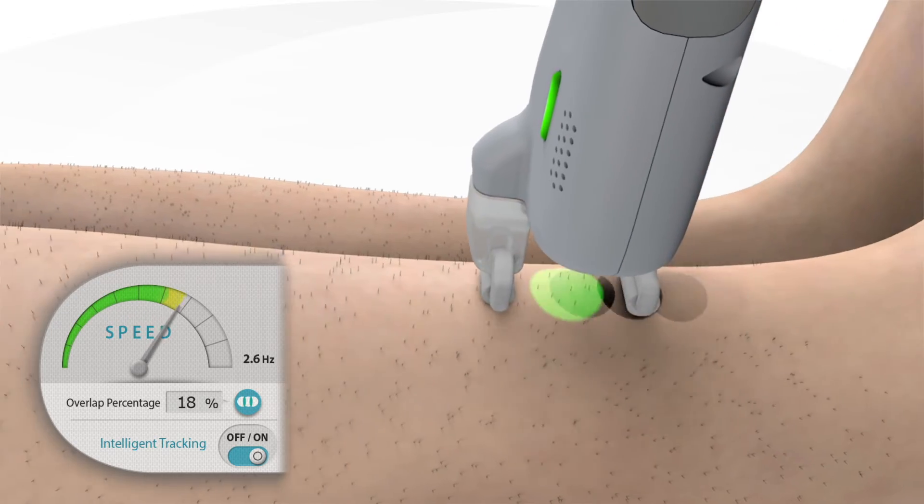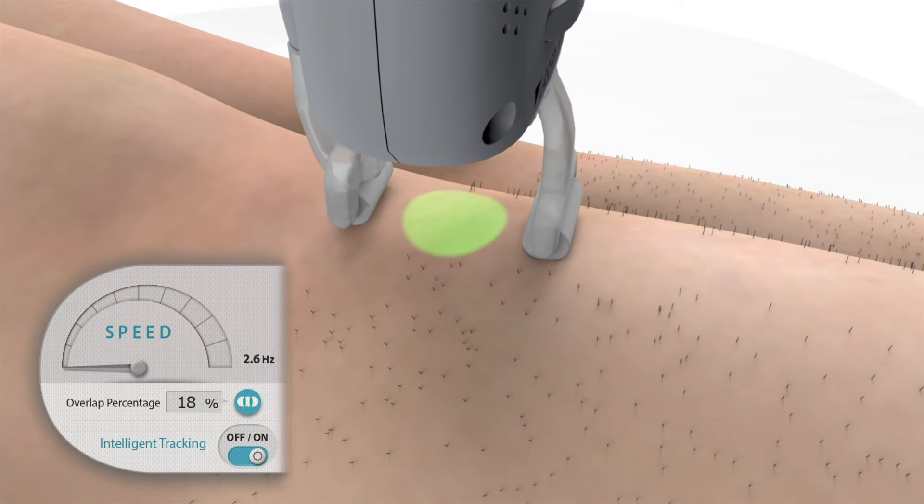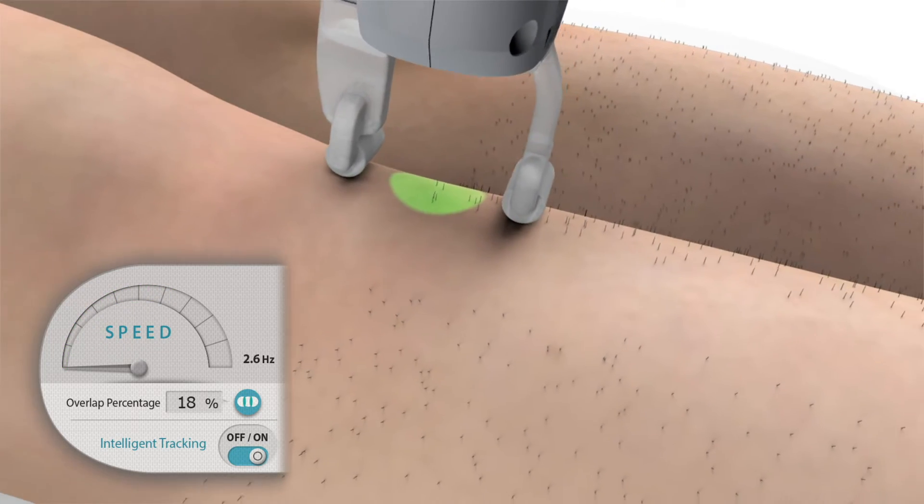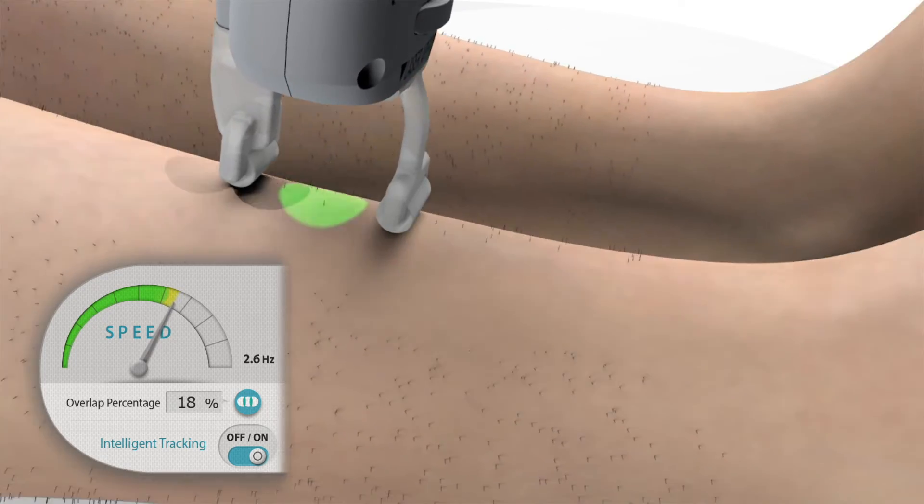Clarity 2's proprietary intelligent tracking provides more complete and consistent coverage, faster treatments on large areas, and delivers optimal results in fewer treatments, all benefiting you and your patients.